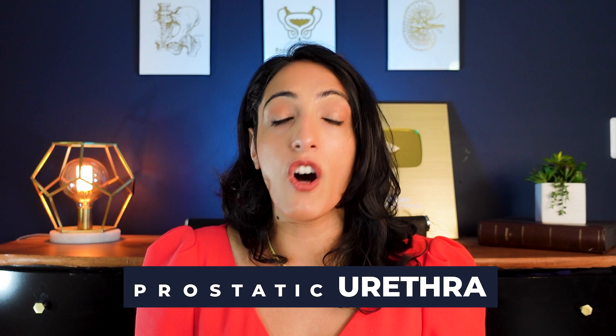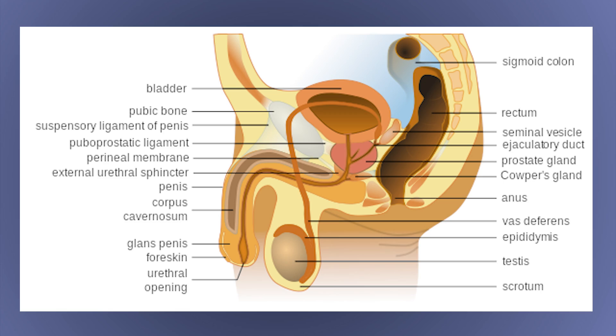As the vas deferens gets closer to the prostate, it becomes a little more dilated and tortuous. It then combines with the seminal vesicles into the ejaculatory duct, and this duct enters into the urethra near the prostate in an area called the prostatic urethra. The vas deferens brings sperm from the testicles into the ejaculate, while the seminal vesicles combine fluid to make semen. The seminal vesicles are sac-like structures that sit behind the prostate, underneath the bladder.